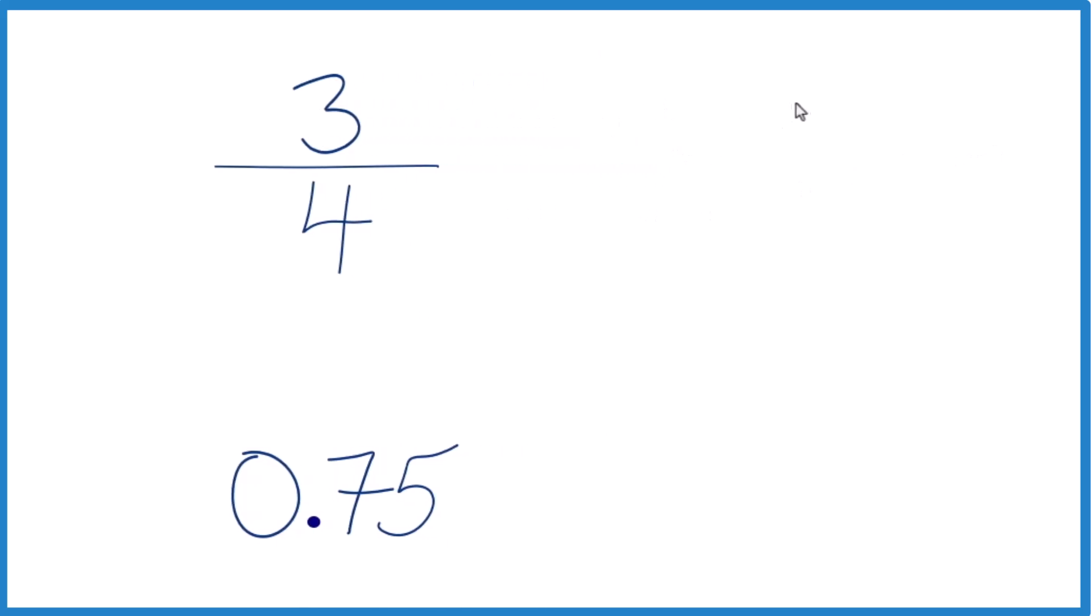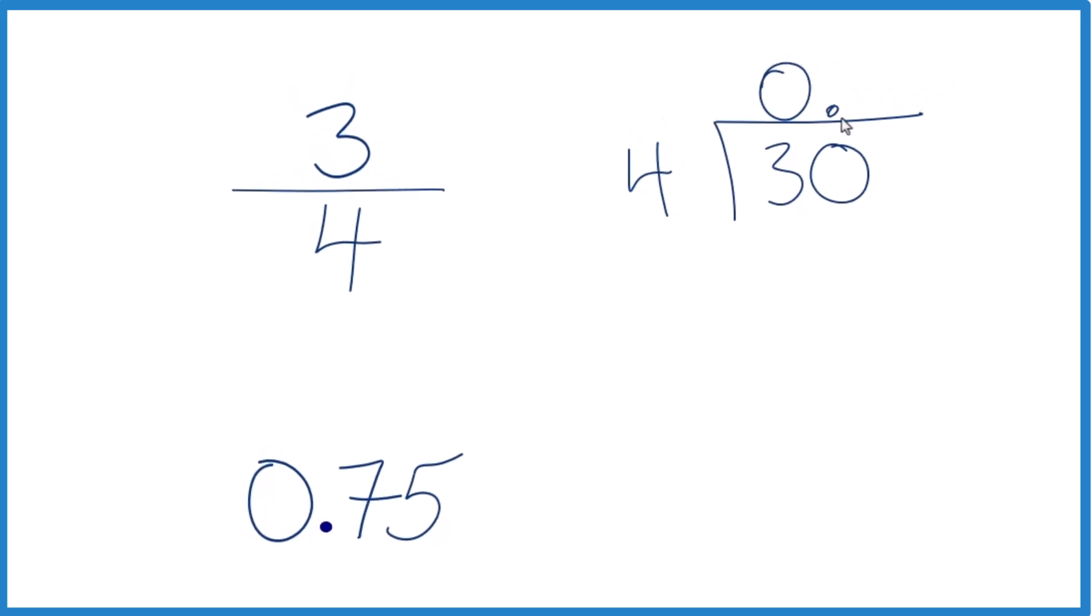This is 3 divided by 4. So we have 3 and we want to know how many times does 4 go into 3? 4 won't go into 3, but we could call it 30 as long as we put 0 and a decimal point up here.